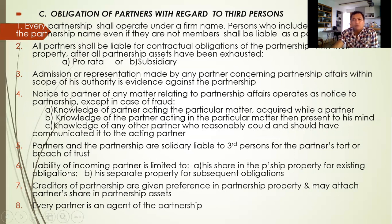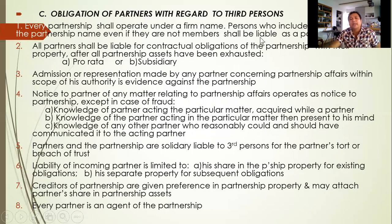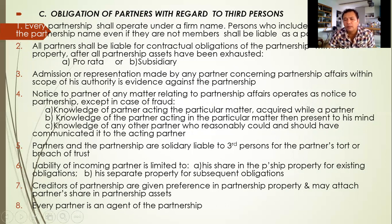Now we discuss the obligations of partners with regard to third persons or creditors. First obligation: every partnership shall operate under a firm name. Persons who include their names in a partnership name, even if they are not members or partners, shall be liable as a partner. If you include your name in the partnership and you are not a partner, if that partnership experiences losses and cannot pay its debts, you will be made liable from your personal assets. Number two: all partners shall be liable for contractual obligations of the partnership with their property after all partnership assets have been exhausted.